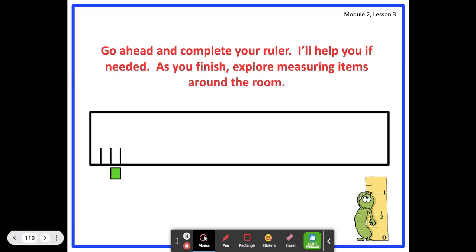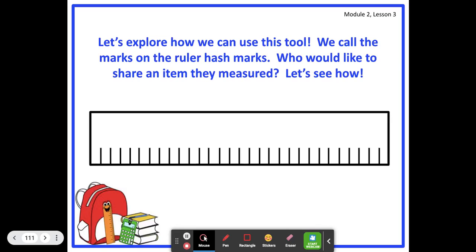Go ahead and complete your ruler. As you finish, explore measuring items around the room. So, what I want you to do is try your best to use the entire piece of paper or the entire tag board. Try your best to have 30 hash marks in there.